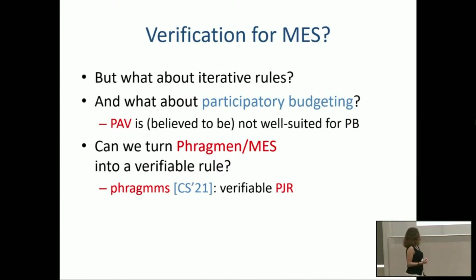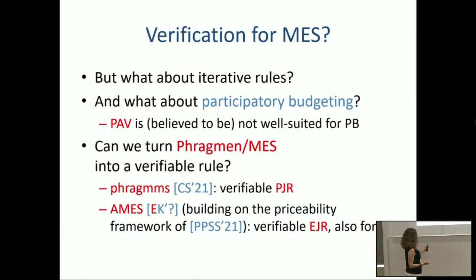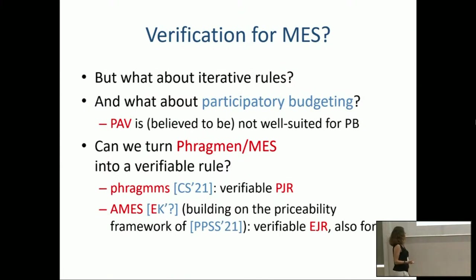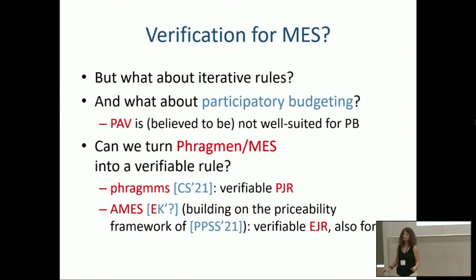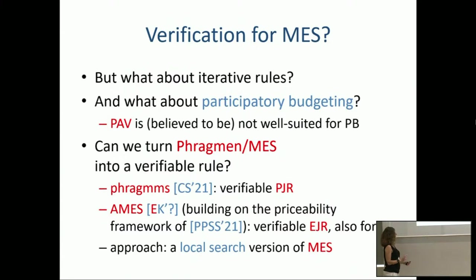We want EJR, not just PJR. In a recent paper with my student Sonja, we proposed an adaptation of the method of equal shares that gives EJR in polynomial time and works for participatory budgeting. This builds on predecessor work by Dominic Peters, Piotr Skowron, Nisarg Shah, and Grzegorz Pierczyński on the idea of priceability as a verification method. What we show is that method of equal shares can be turned into a linear-time verifiable rule using local search.